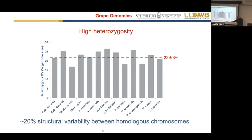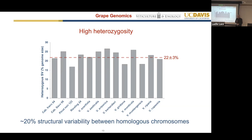When we talk about structural variability, we're talking about insertions, deletions, translocations, and other rearrangements that impact chromosome structure. When we compare homologous chromosomes within each of these genomes, we find that the homologous chromosomes differ by 20%. And since most cultivars are related to one another, we see the same degree of structural variability between cultivars — about 20% of the genome is heterozygous at the structural level.